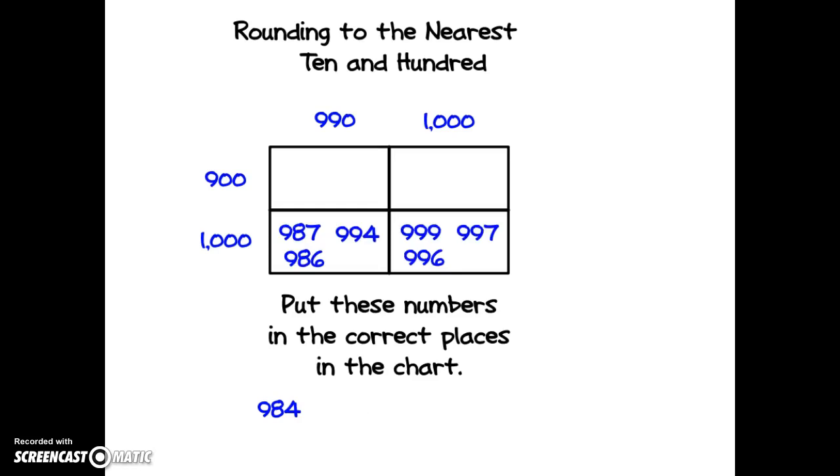Did you notice I tricked you? Yes, 984 does not round to 990 and 900, 900 and 1,000, 990 and 1,000, or 1,000 and 1,000. So I left it out of the chart.